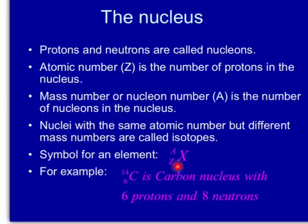Symbol for an element: X is the element, A is mass number, Z is proton number. For example, C-14 is a carbon nucleus with 6 protons and 8 neutrons, 8 being the difference between 14 and 6.